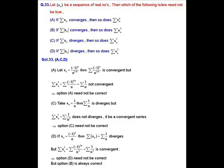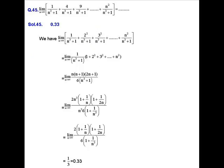In option D: if summation |a_n| is divergent, then summation a_n² is also divergent. This is also incorrect. If we take a_n = (-1)^n / n, then summation |a_n| = summation 1/n, which is divergent, but summation a_n² = summation 1/n², which is convergent. So option D is also not true. Therefore, only option B is correct, and options A, C, D are not true.